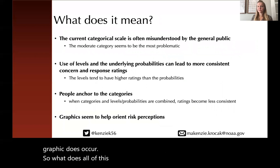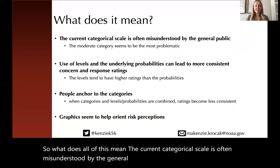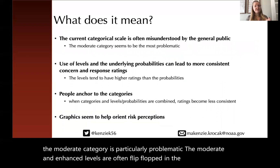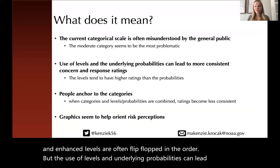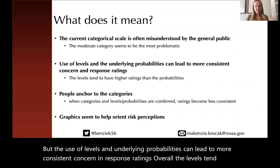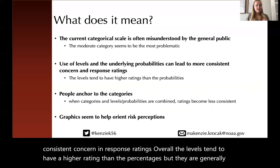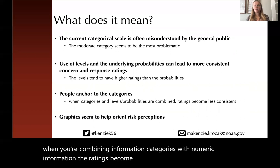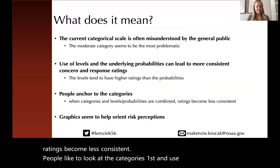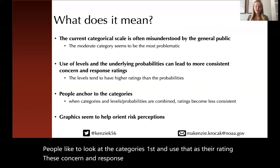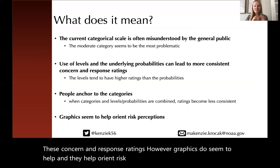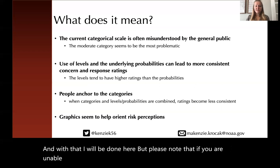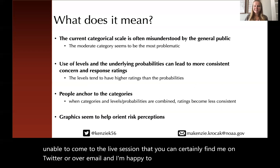The current categorical scale is often misunderstood by the general public. The moderate category is particularly problematic — the moderate and enhanced levels are often flip-flopped in order. The use of levels and underlying probabilities can lead to more consistent concern and response ratings; levels tend to have higher ratings than percentages, but are generally ordered correctly. When combining category with numeric information, people anchor to the categories and ratings become less consistent. However, graphics do seem to help orient risk perceptions, particularly when people can see the graphic with the bullseye on it. Please find me on Twitter or over email if you'd like to discuss this work further. Thank you.